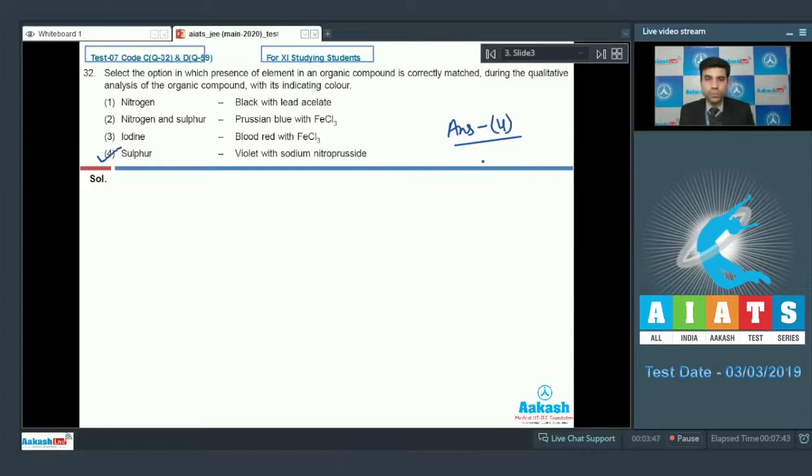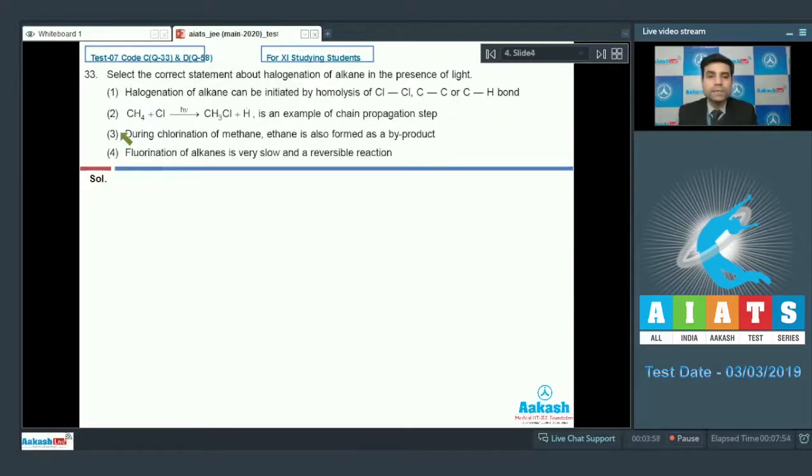Now let's move to the next question. This is the next question we have. It says select the correct statement about halogenation of alkane in the presence of light. First option is halogenation of alkane can be initiated by homolysis of Cl-Cl, carbon-carbon or C-H bond. Second statement is CH4 plus Cl free radical in presence of sunlight gives us CH3Cl plus H free radical is an example of chain propagation step.